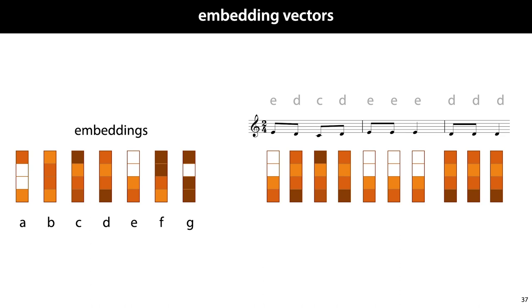We compute the loss, and we back-propagate, and then we get gradients on all parameters of the model, including these embedding vectors. As we train, these vectors become useful representations of our words in some high-dimensional space.